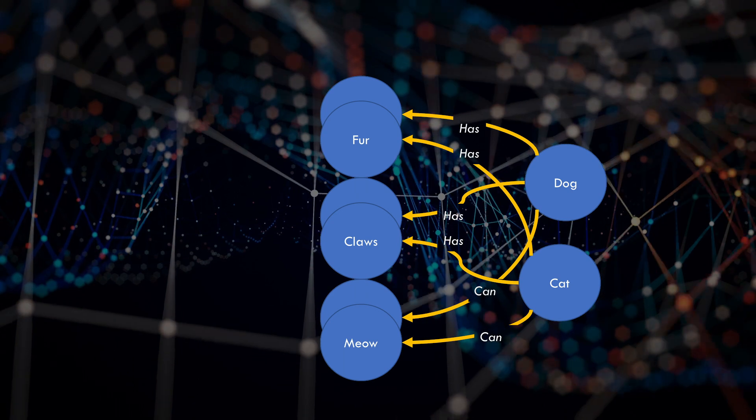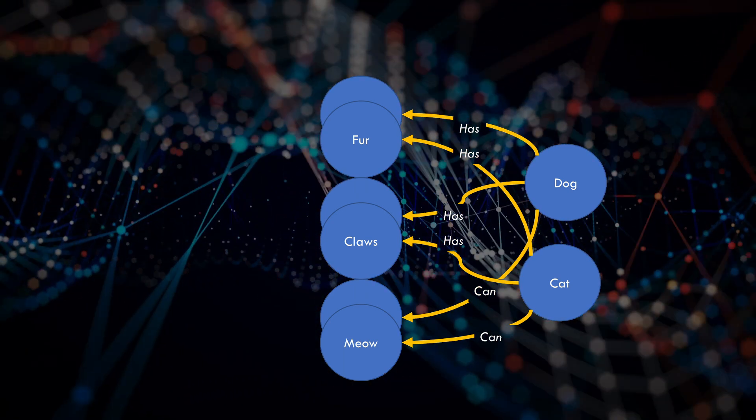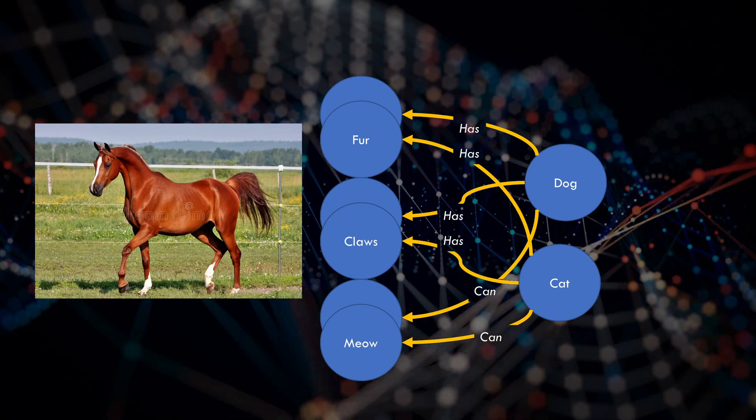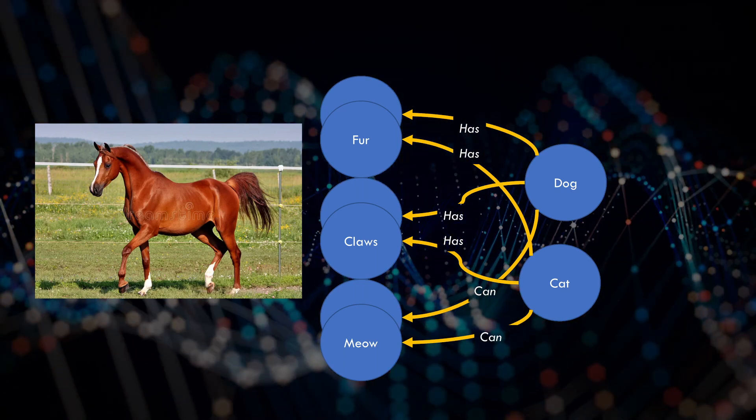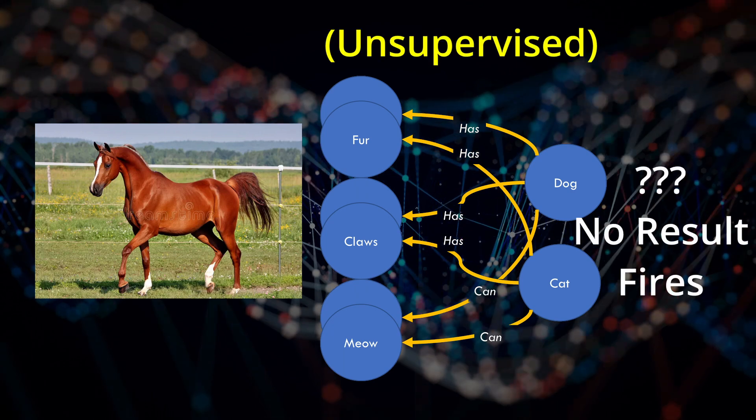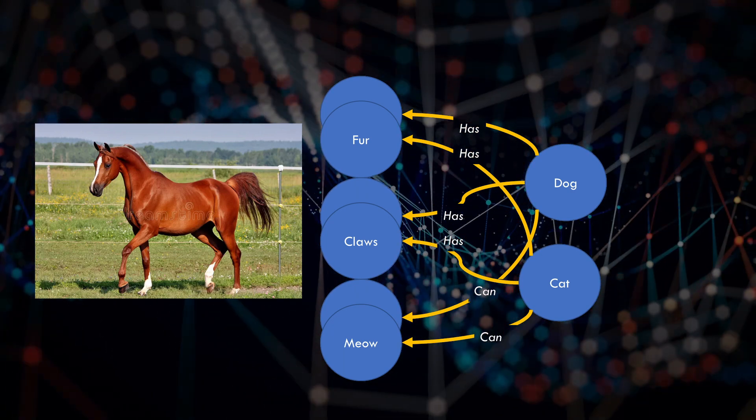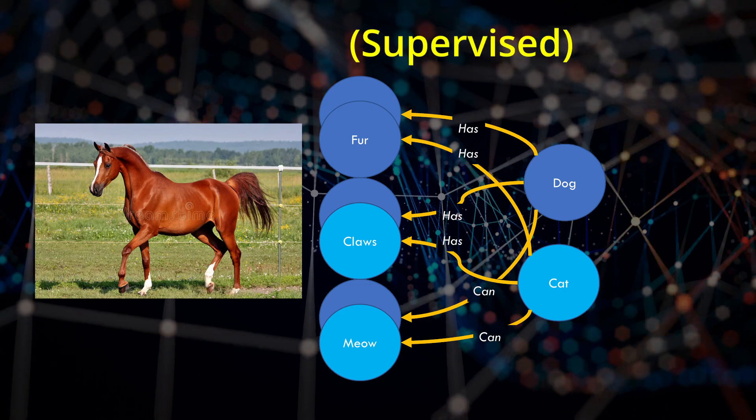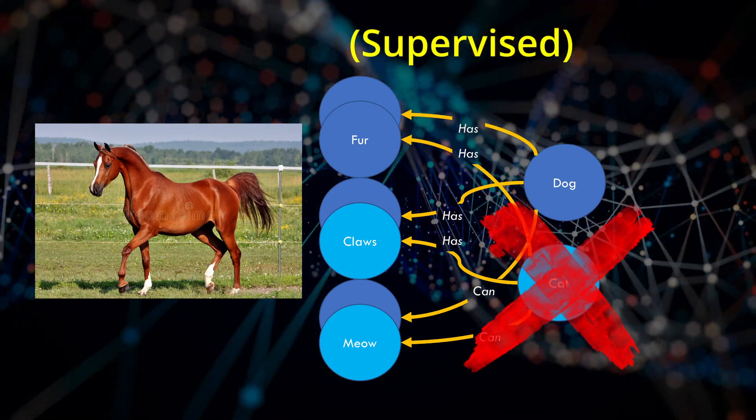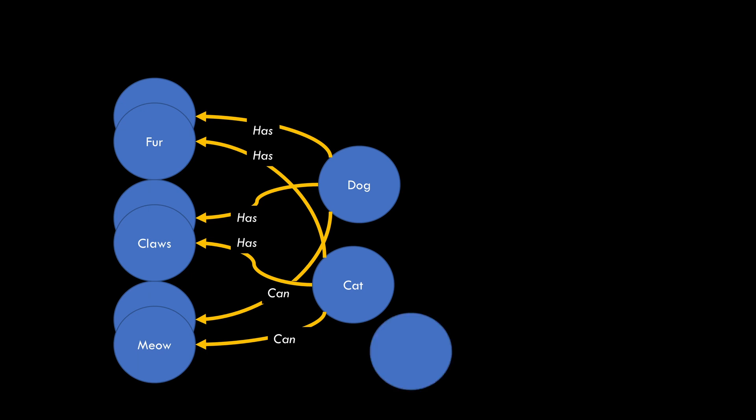Let's presume that our system has learned to recognize only dogs and cats. When it sees a horse, what happens? Either the set of attributes it sees results in a low confidence so there is no result, or it gets a high enough confidence result and is told it is wrong. In either case, the system needs to learn so it allocates a new thing and adds relationships to the current attributes.